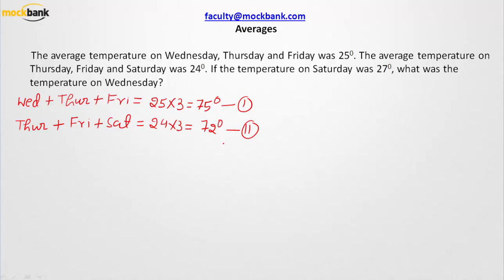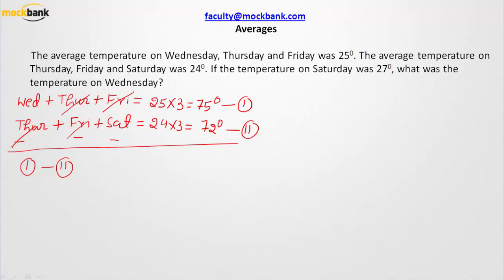What do we have common in equation number one and equation number two? We have Thursday and Friday in common. If we subtract equation number two from equation number one, Thursday cancels with Thursday and Friday cancels with Friday. In equation number one we have positive Wednesday, and in equation number two we have negative Saturday. On the right side, that is 75 minus 72, giving a difference of 3 degrees between Wednesday and Saturday.